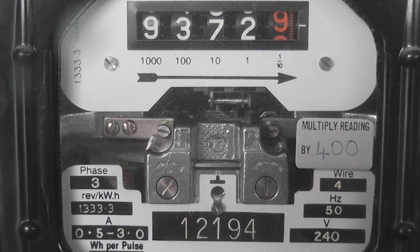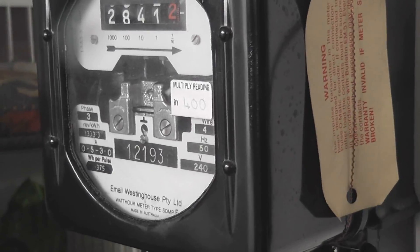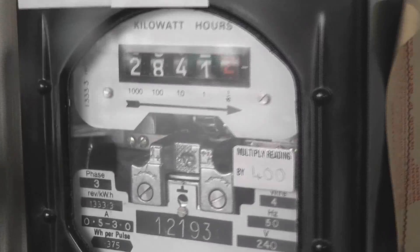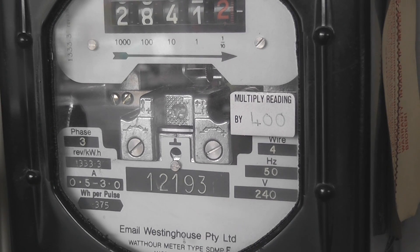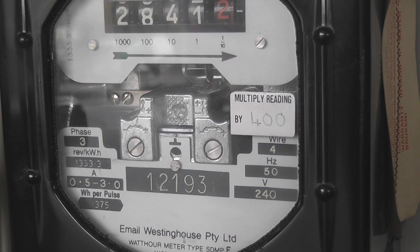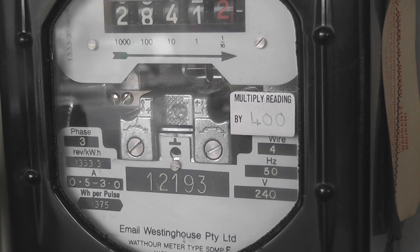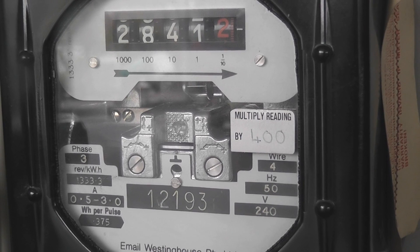This particular meter number is 12194 and the other one here is 12193. So these would have been next to each other in the test batch from the manufacturer. Really cool. I haven't looked at the other meters yet, so there might be more in the particular sequence.